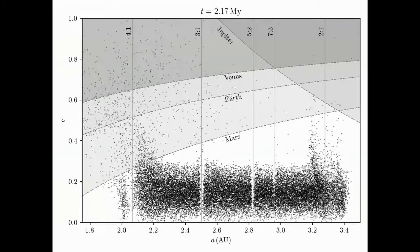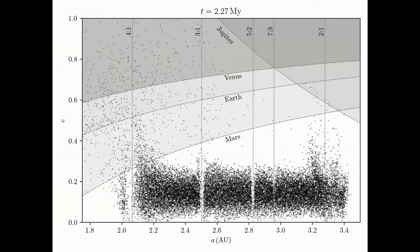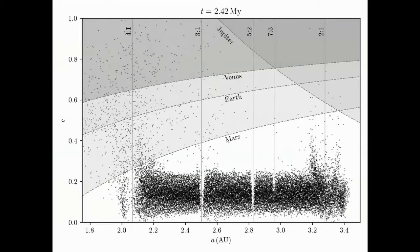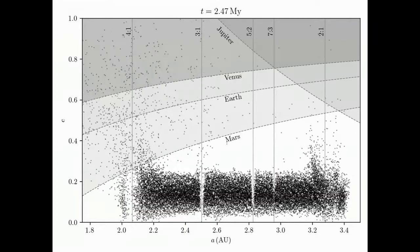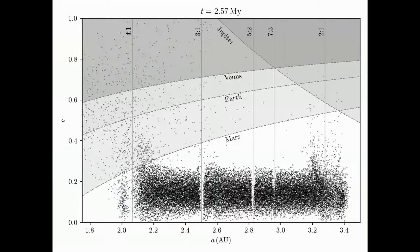At 2 million years, the 4-1, 3-1, and 5-2 gaps are clearly visible, while the 7-3 gap is beginning to open.